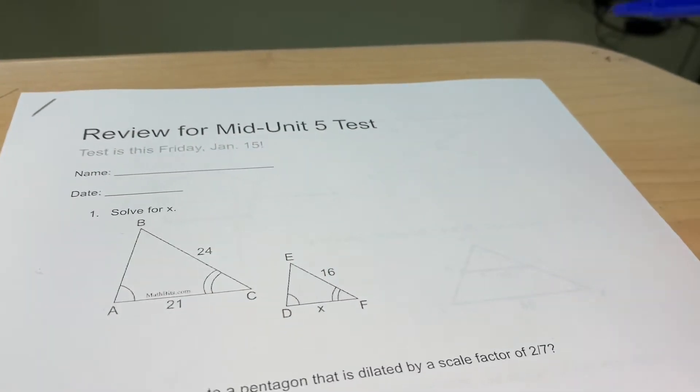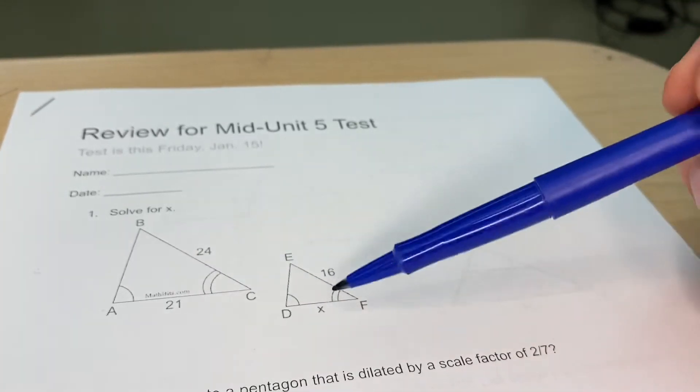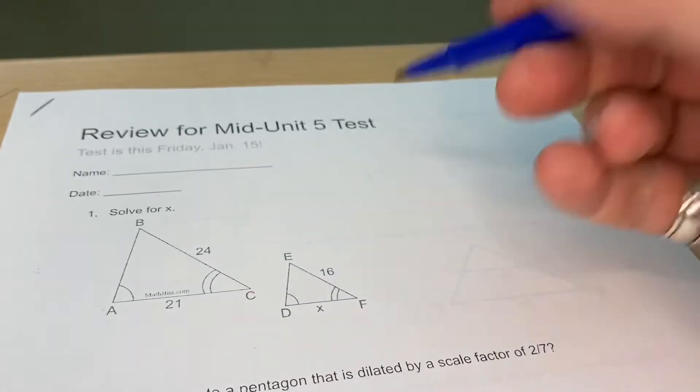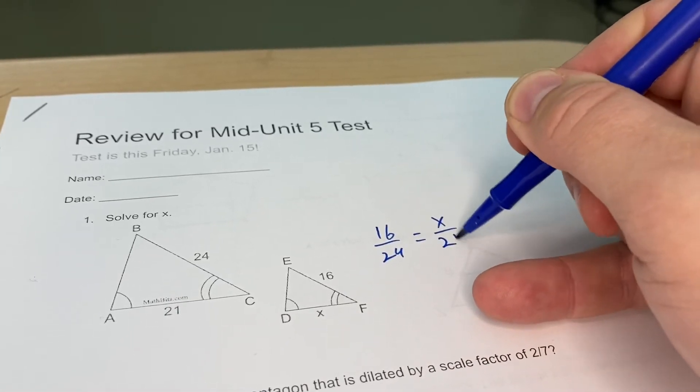Question number one is solve for x. These triangles are actually orientated the exact same way, and I like to go big to small. So I go 16 over 24 is equal to x over 21.